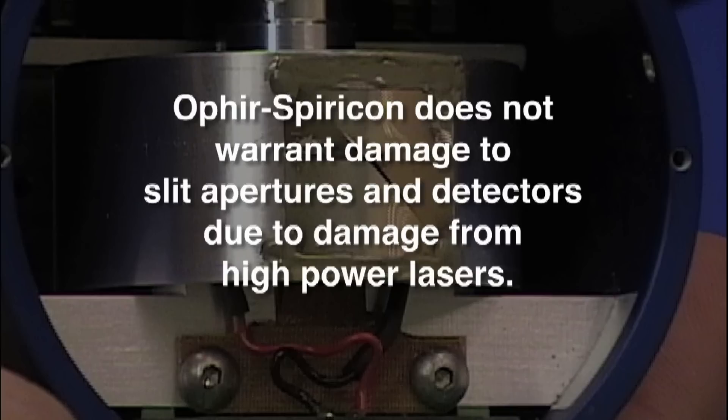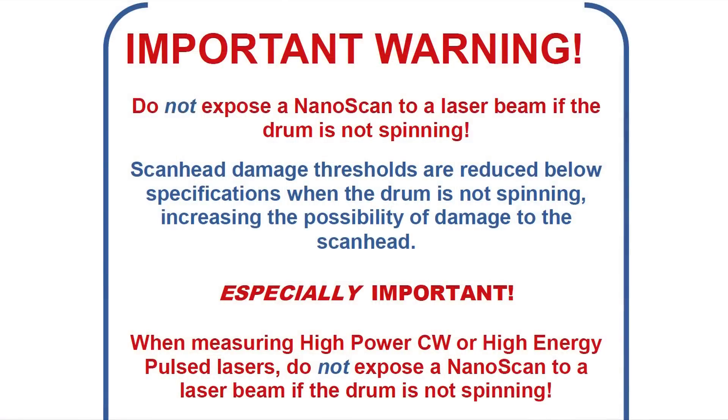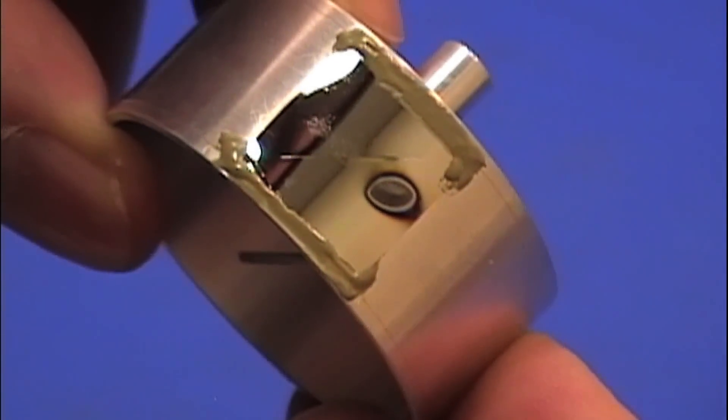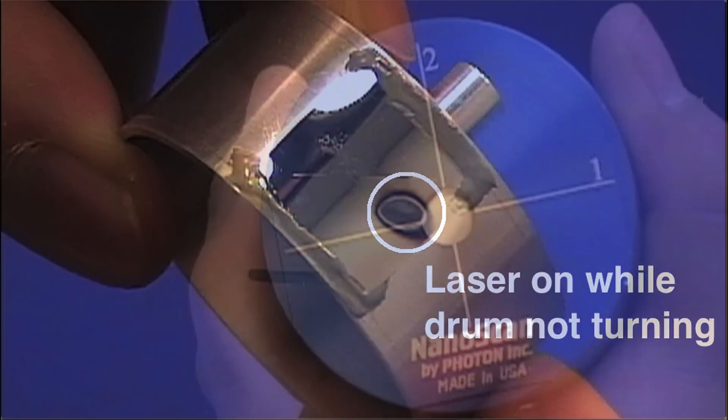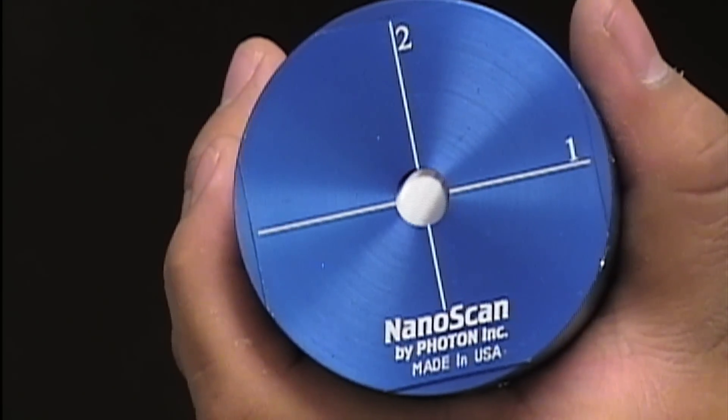Users of high-powered lasers must exercise caution when measuring their laser beams with their nanoscan. Damage to the slit apertures can occur at much lower power levels if the laser beam is directed into the slit apertures while the apertures are stationary. Always have the scanning profiler spinning when exposed to the laser beam.